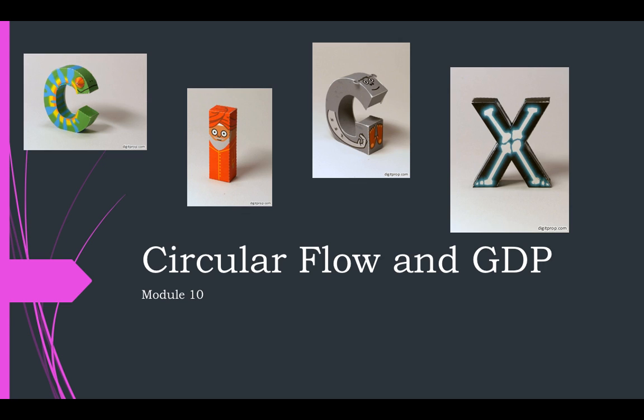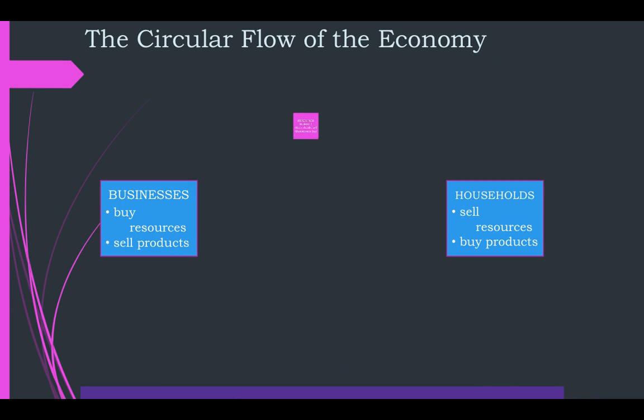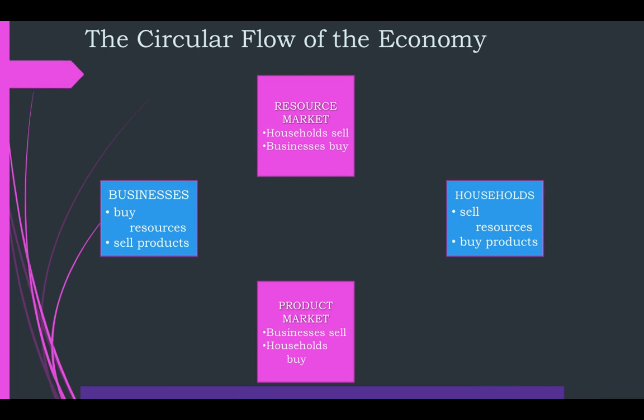The first thing we're going to talk about is the circular flow of economic activity. You can find copies of this in your book or all over, but I'm going to go through it with you now. There are two markets in the circular flow and two main groups. The two markets are the resource market and the product market, and the two main groups are households and businesses.